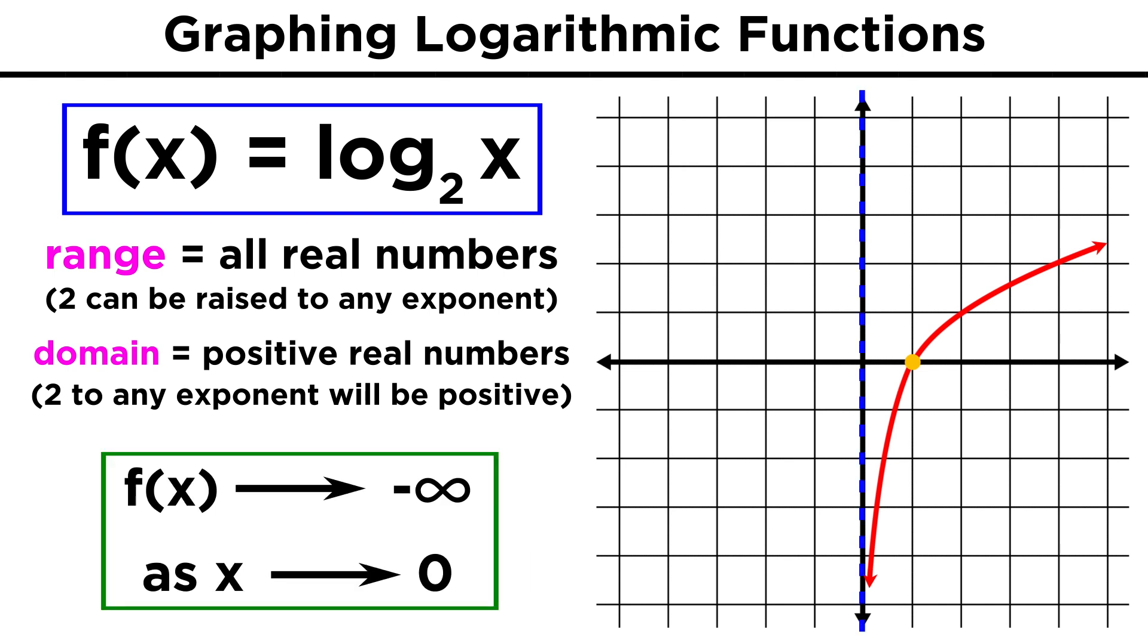As we approach this vertical asymptote from the right, the function approaches negative infinity, and as we go towards positive infinity, the function goes towards positive infinity.